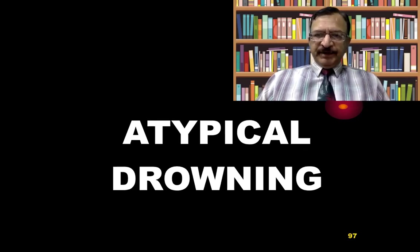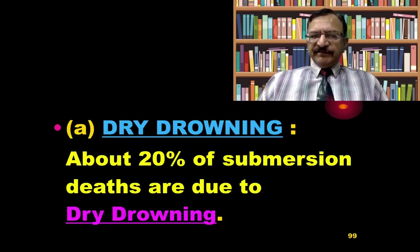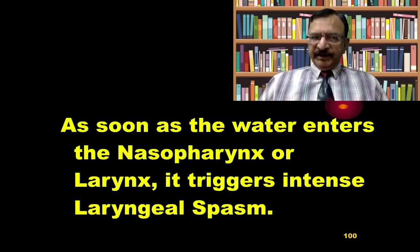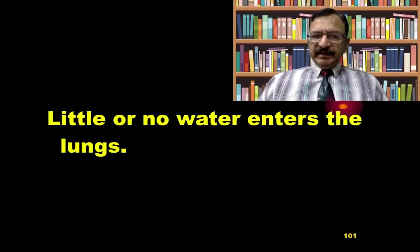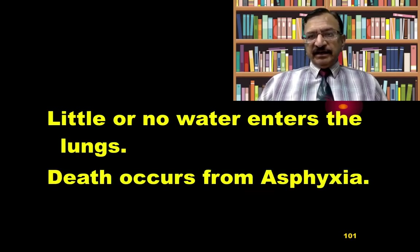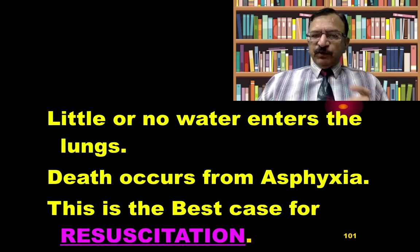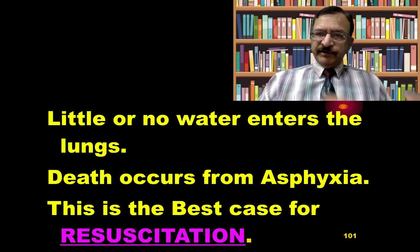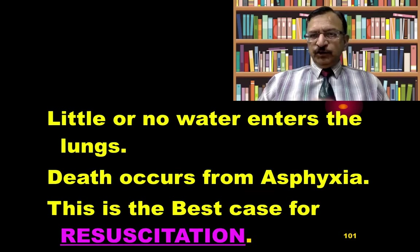In atypical drowning, one form is dry drowning. About 20% of submersion deaths are due to dry drowning, where water does not actually enter into the circulation. As soon as water enters the nasopharynx or larynx, it triggers intense laryngeal spasm, and little or no water enters the lungs. Death occurs from asphyxia due to spasm of the vocal cords. Dry drowning cases are the best candidates for resuscitation, so keep resuscitating the rescued individual as they may be a victim of dry drowning.